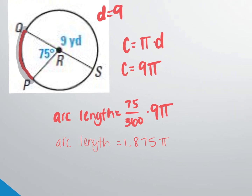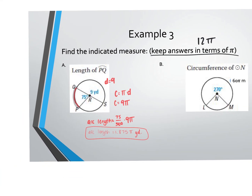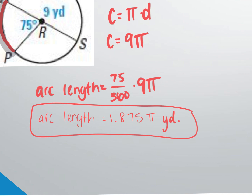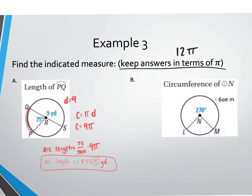So the arc length is 1.875π yards. The units are yards. Hannah asks if she can simplify to 1.90 — no, because it didn't say to round, so include all decimal places. The pi symbol goes after your answer because the instructions say keep your answers in terms of pi. Anytime it says that, pi should be part of your final answer.